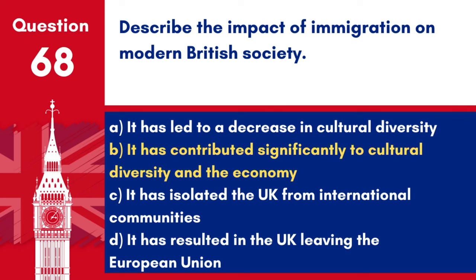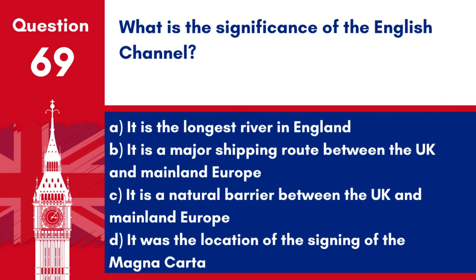Question 69. What is the significance of the English Channel? A. It is the longest river in England. B. It is a major shipping route between the UK and mainland Europe. C. It is a natural barrier between the UK and mainland Europe. D. It was the location of the signing of the Magna Carta. Answer: C. It is a natural barrier between the UK and mainland Europe. The English Channel is significant as a natural water barrier separating the UK from mainland Europe.